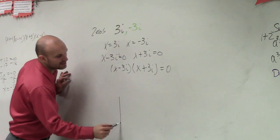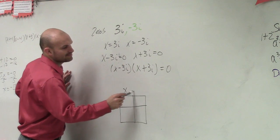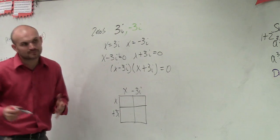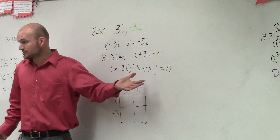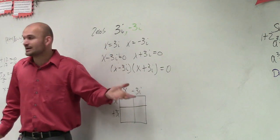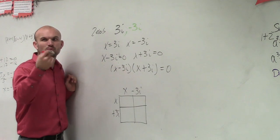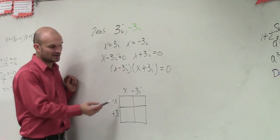So my favorite way to do this is to create a box. x minus 3i and x plus 3i. Now, ladies and gentlemen, you should automatically notice that this is a difference of two squares, right? So multiplying should actually be, hopefully, a little bit quicker for you. But let's just do the box so we can remember why it's a difference of two squares and how we can easily do difference of two squares kind of in our head.